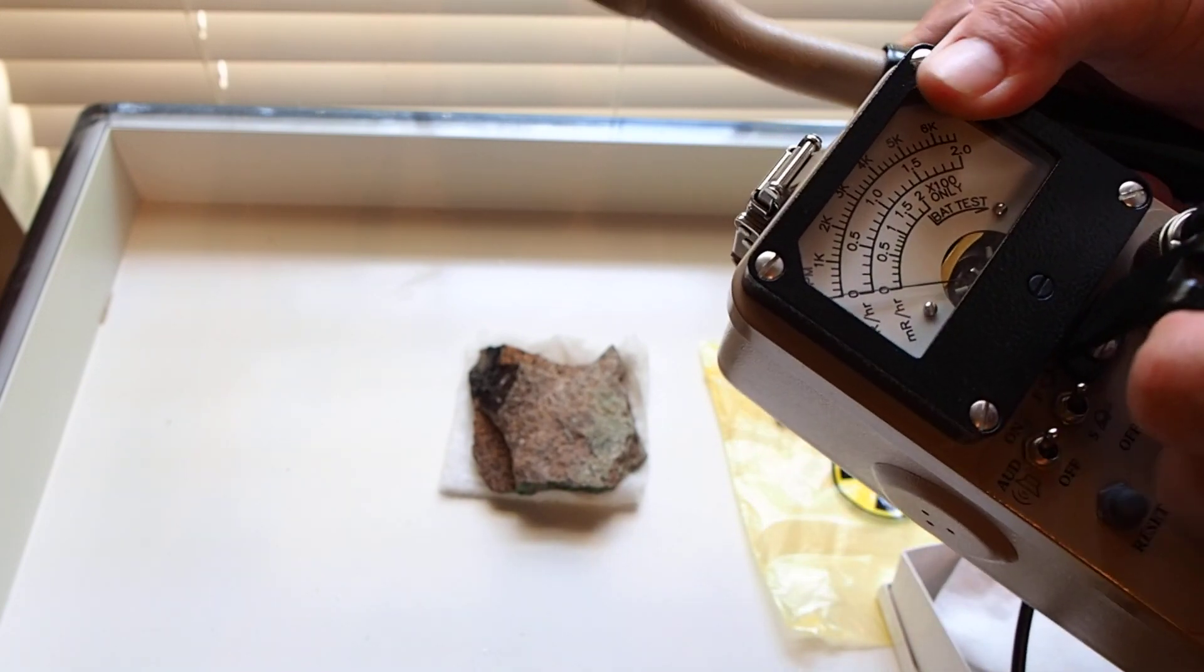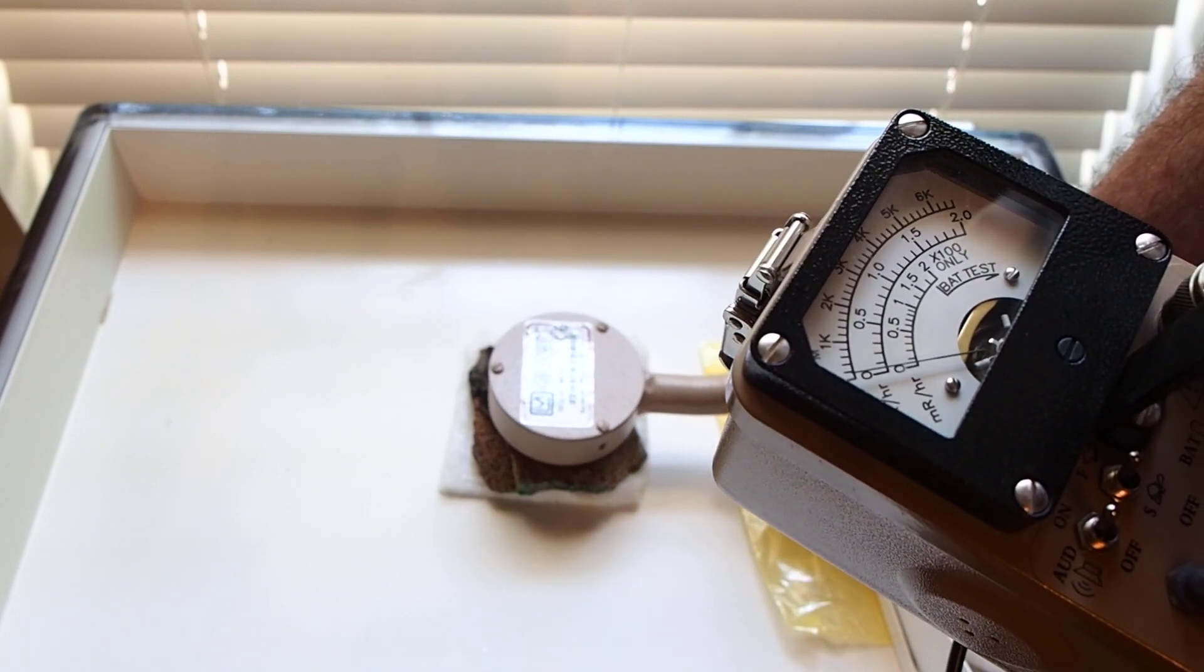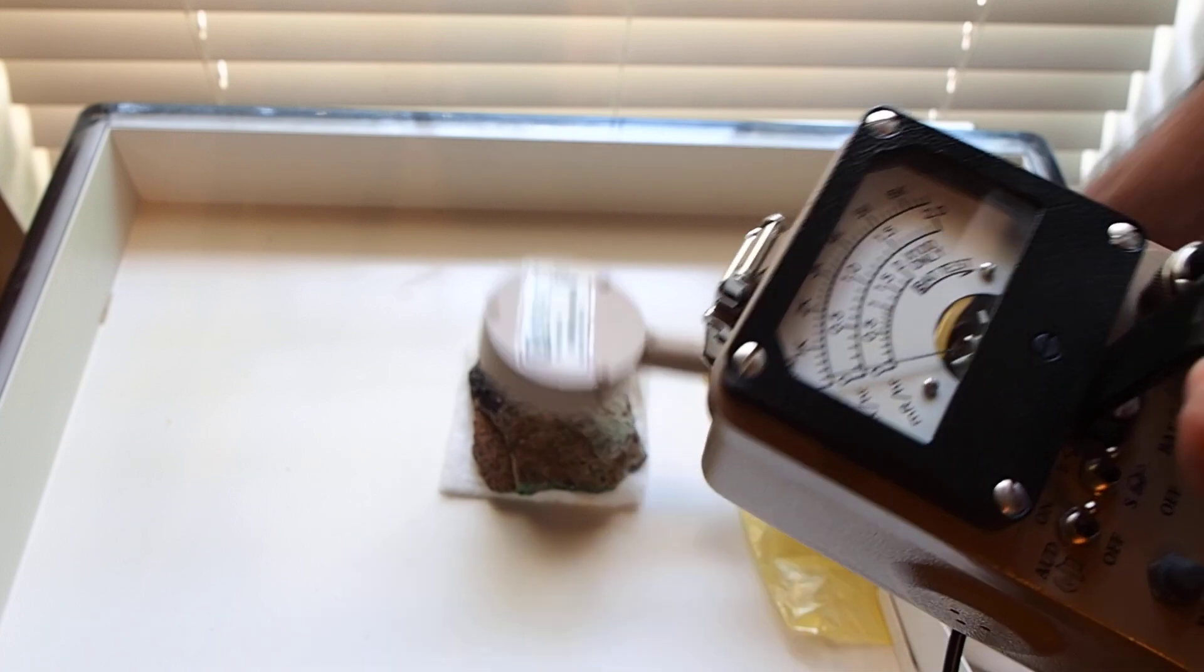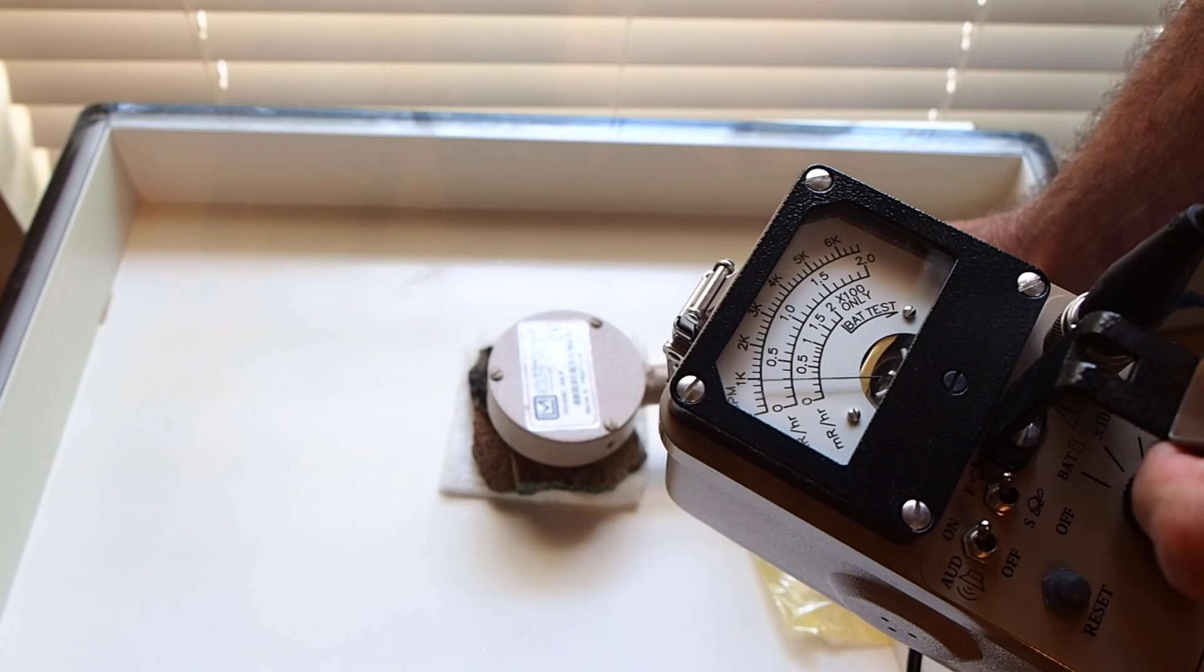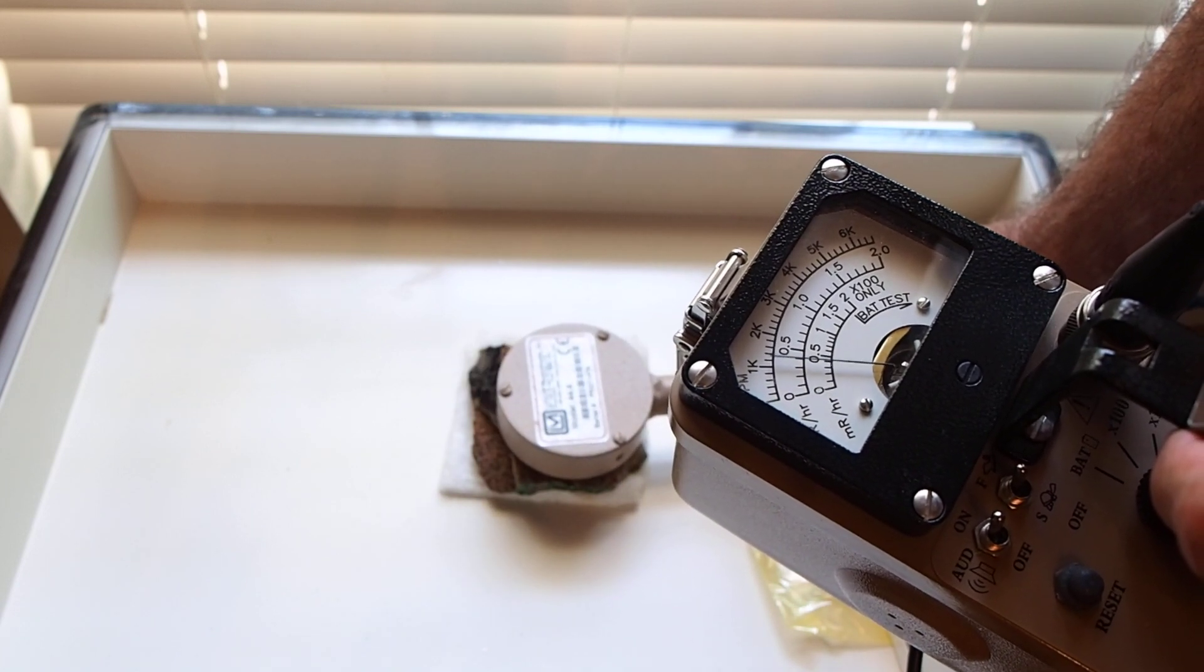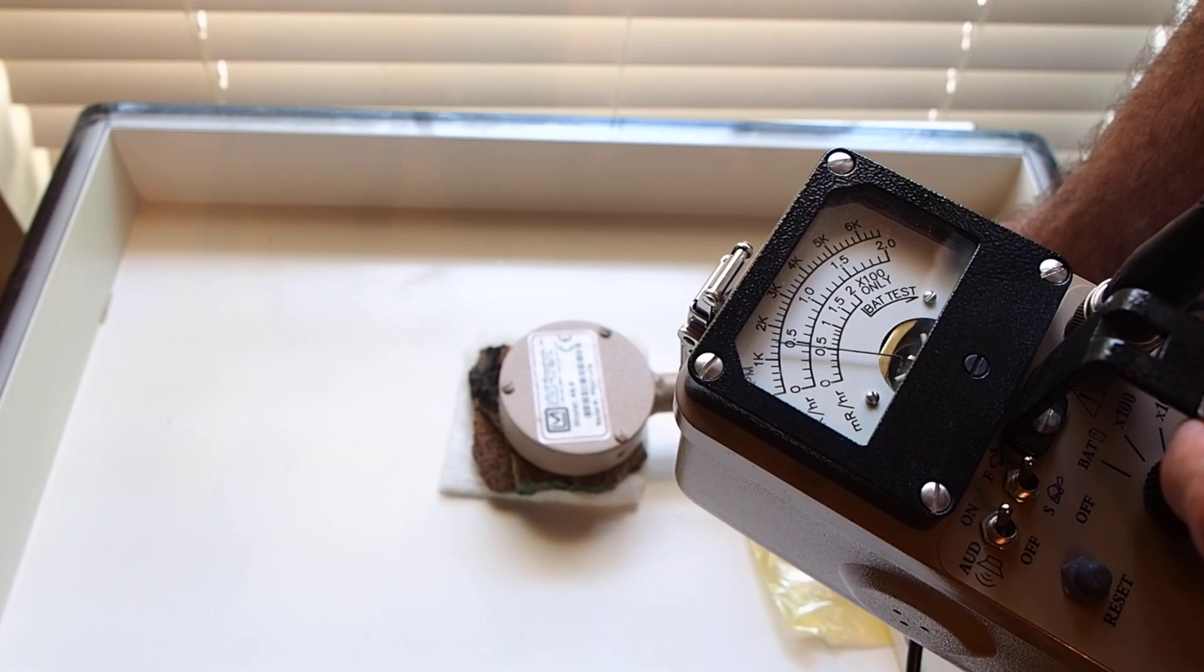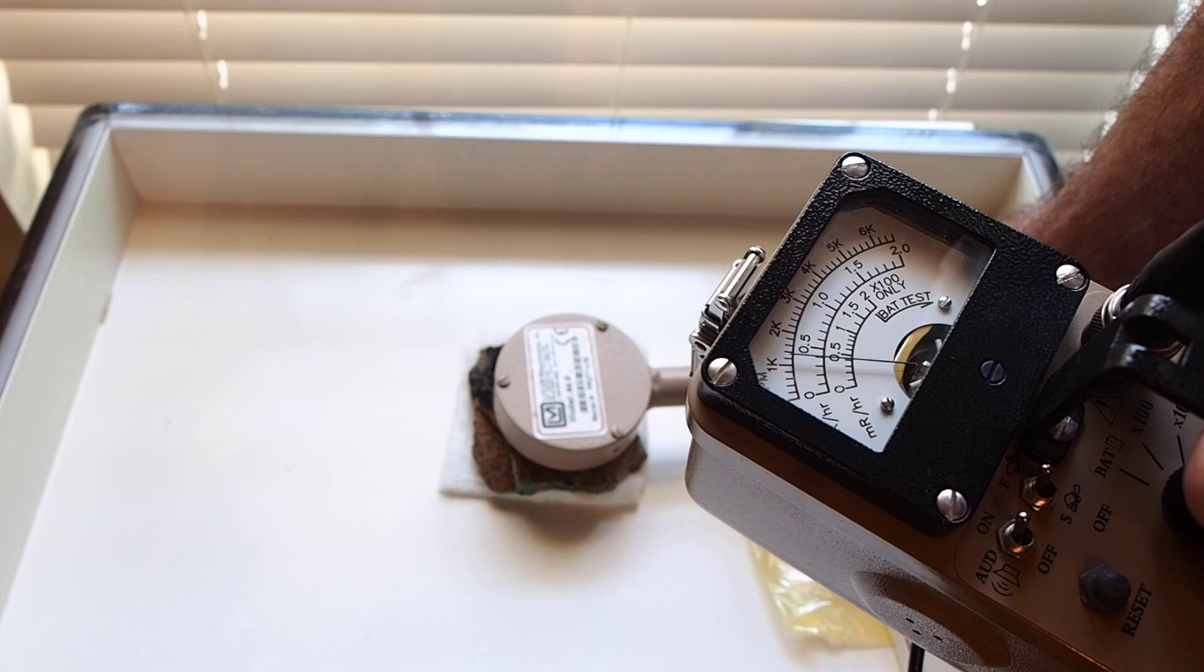We're going to switch back to the times 10 setting. And at the times 10 setting, well, let's go ahead and move it back to the times 1 setting. Reset times 1 setting on this side of the specimen. And we're getting readings in about the 1,500 count per minute range.